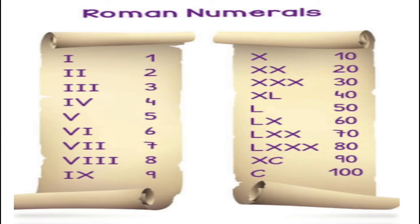Some representations in Roman numerals: 1 can be represented by writing capital letter I one time. For 2, we write I two times. Similarly, 3 in Roman numerals can be written as I three times. This will become more clear when we discuss the rules to form Roman numerals.